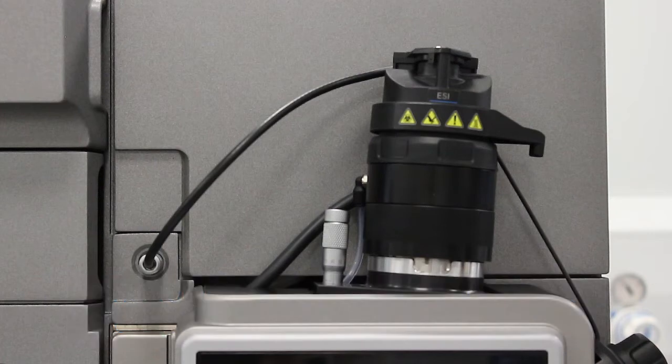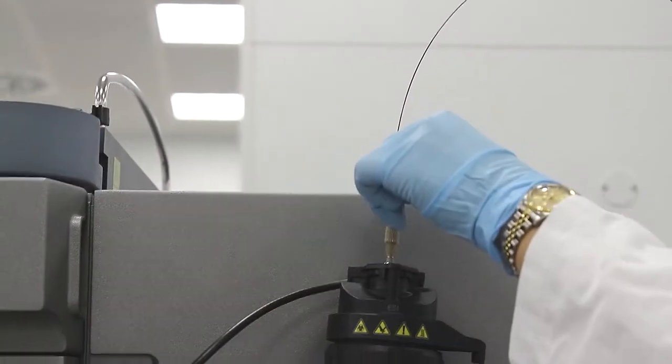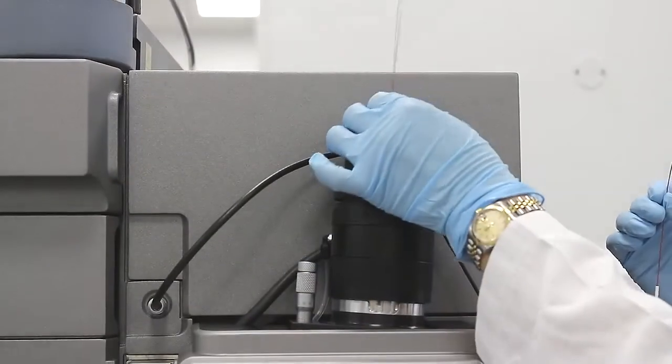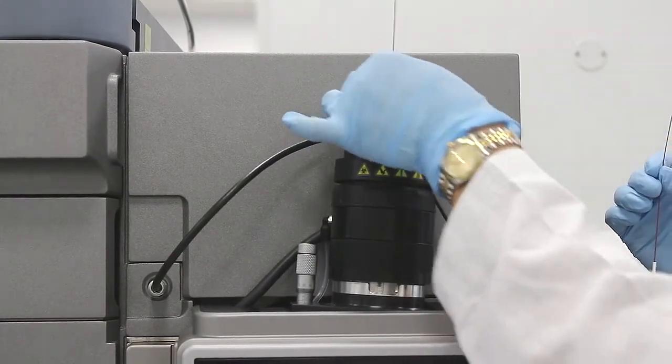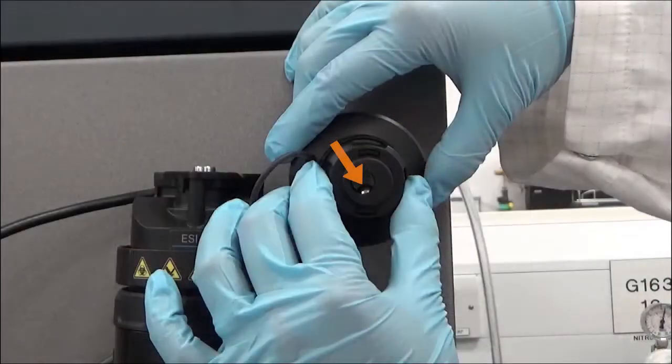To install the probe assembly, remove the cap and then install the probe assembly into the probe adapter. Finger tighten the PEEK fitting into the probe adapter until it clicks to form a seal.